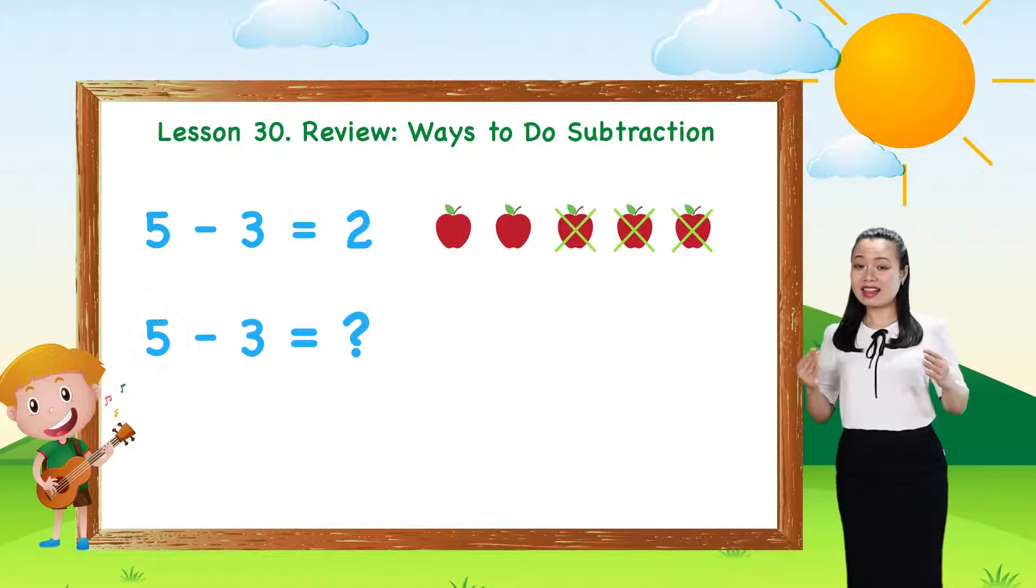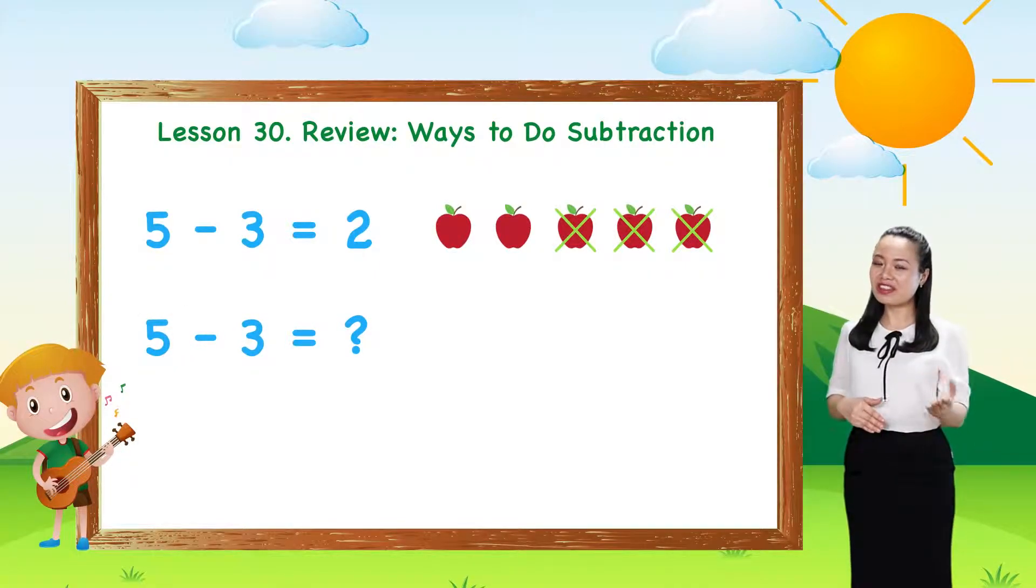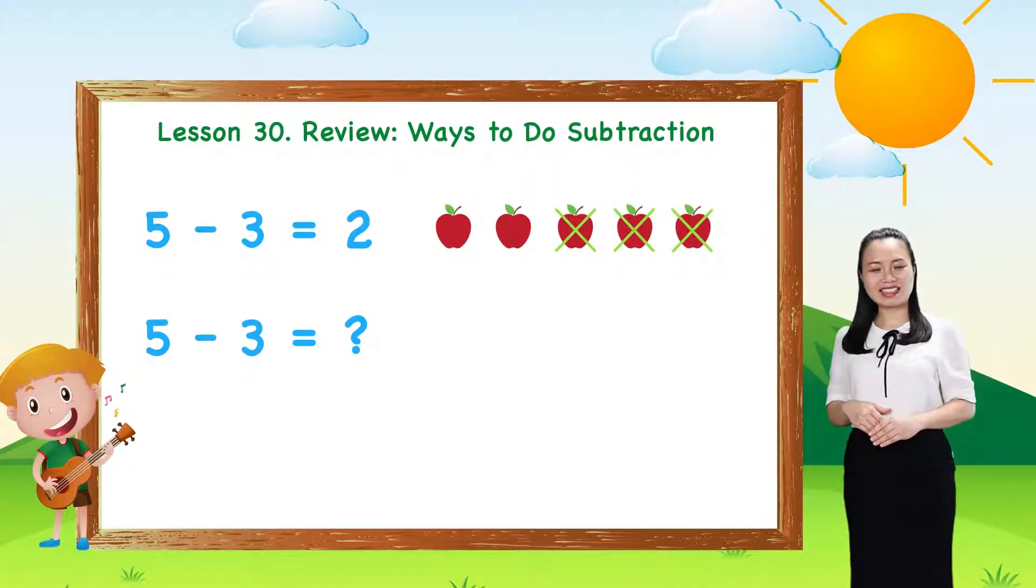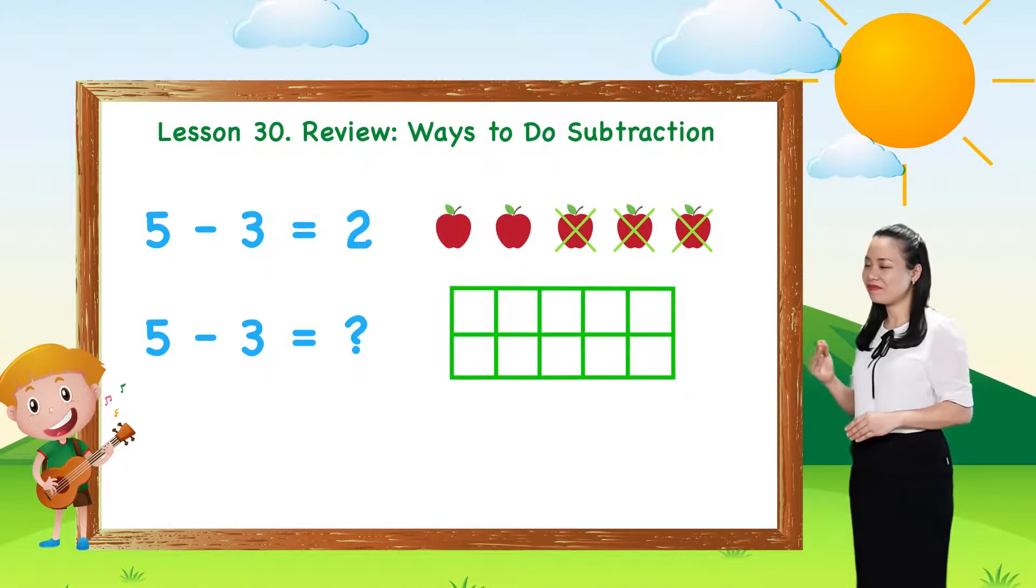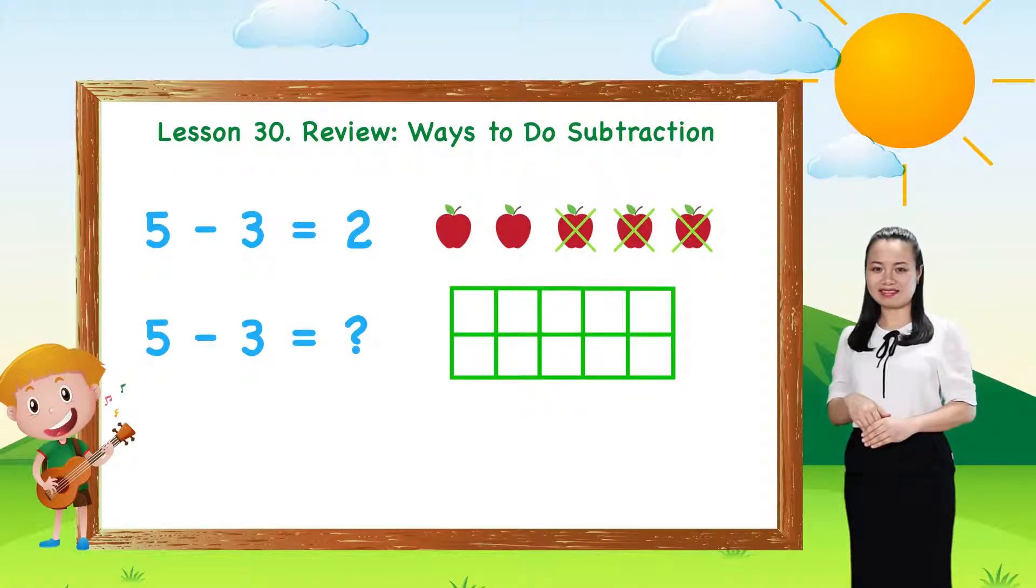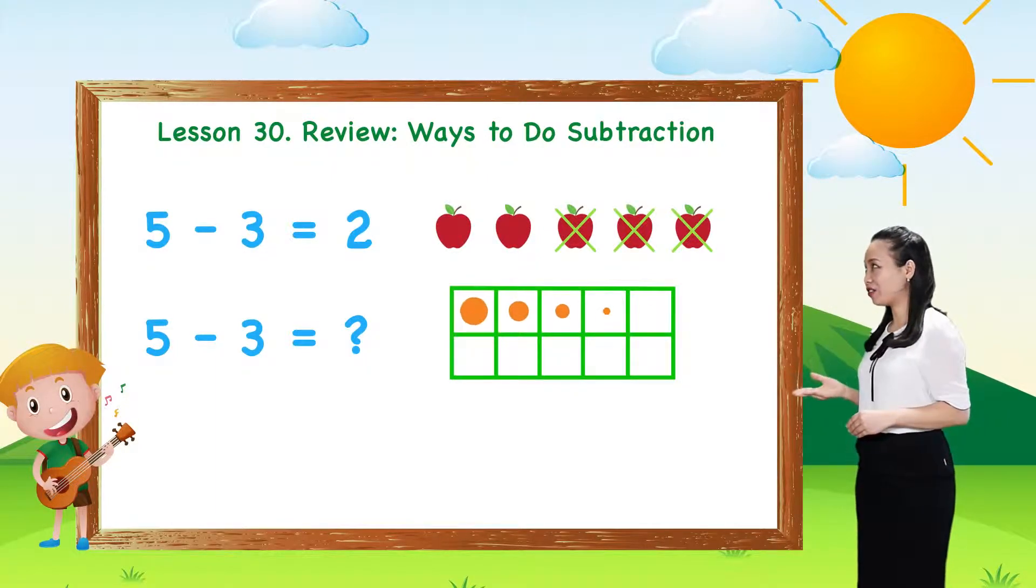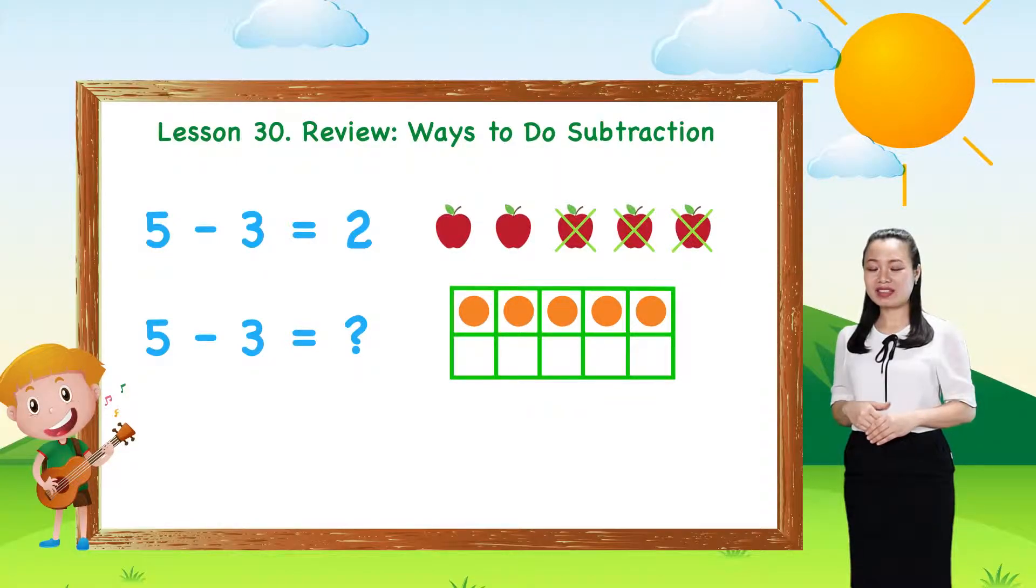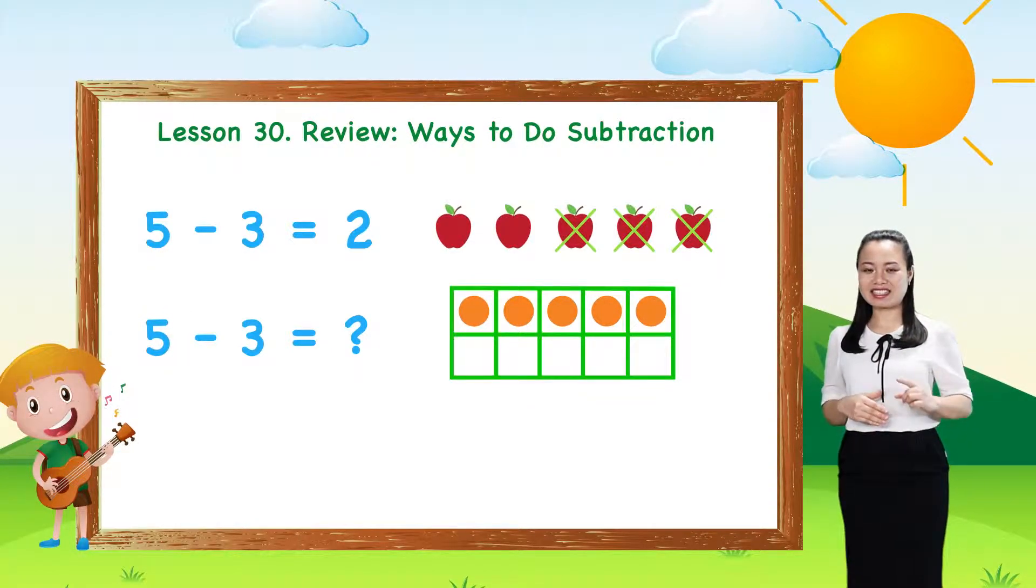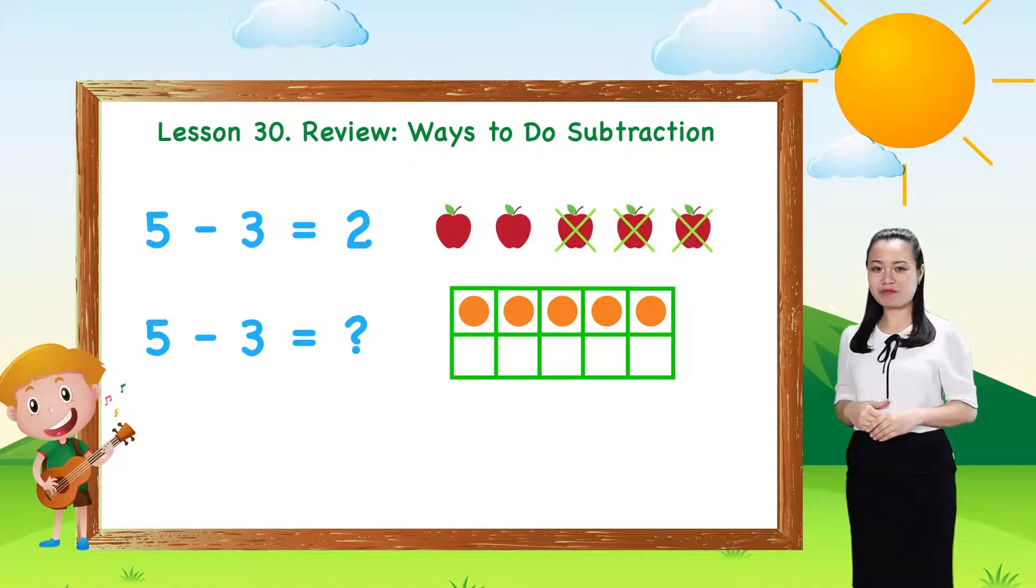What is the second way you think of? The second way I do is I use the 10 frame. Now, I draw 5 dots. Color them orange to represent number 5. Next, I cross out 3 dots to indicate subtraction of 3.